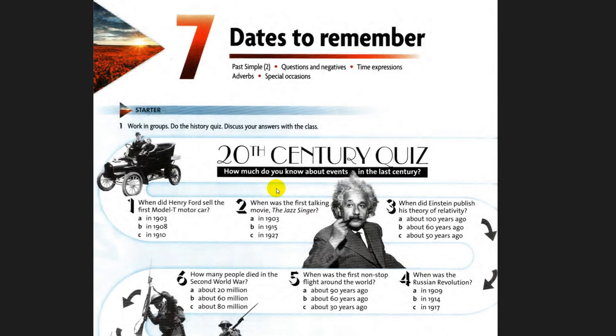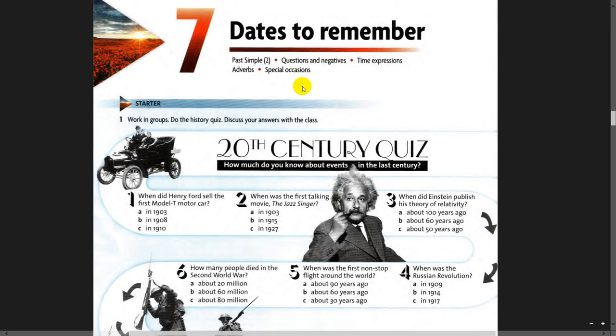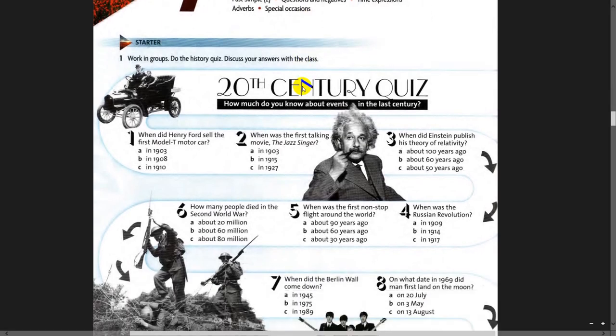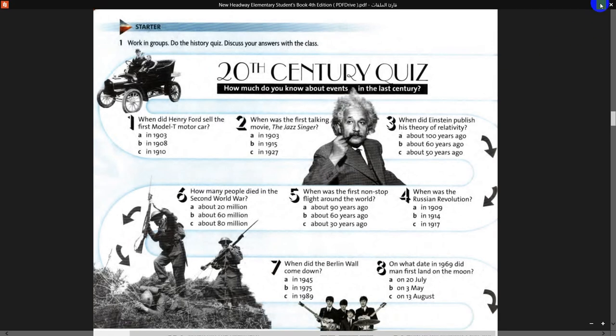We'll review the past simple with questions, negatives, time expressions, adverbs, how we can make adverbs, and special occasions. Please focus on the word occasions, which means special events or special occasions. In this page we have a 20th century quiz, which covers important dates in modern contemporary history. We'll listen to a tape script that solves this quiz, and in today's discussion I'm going to ask you about these questions one by one.